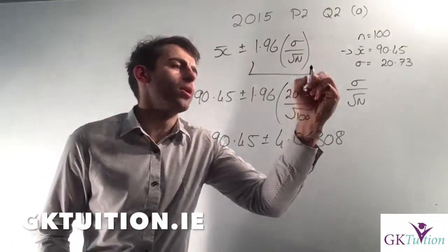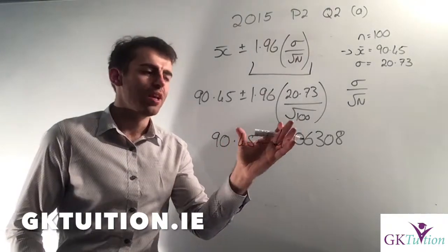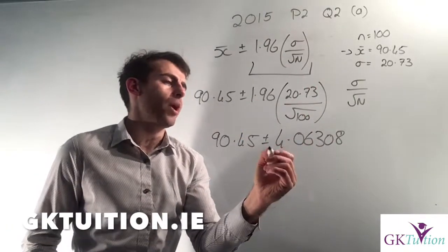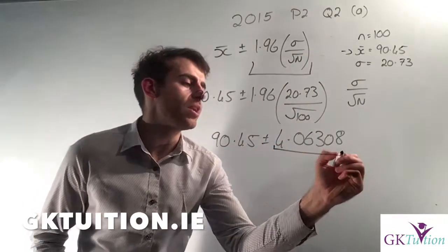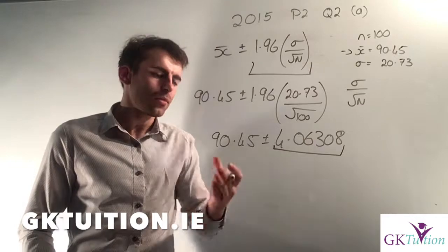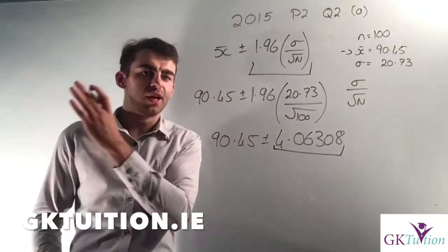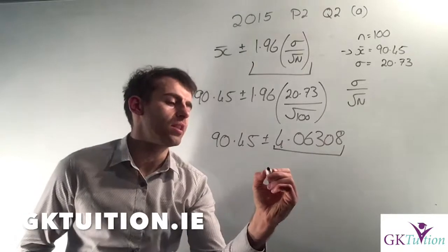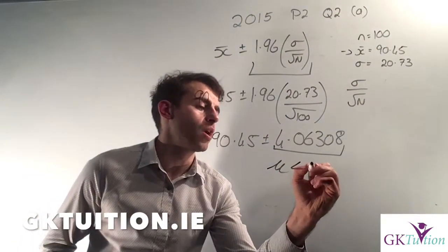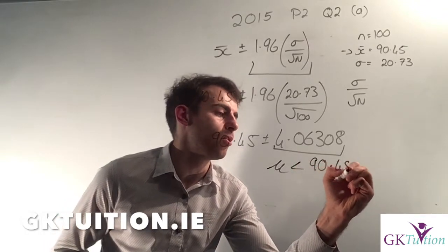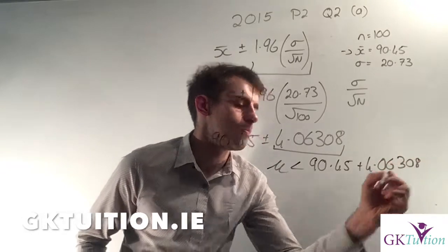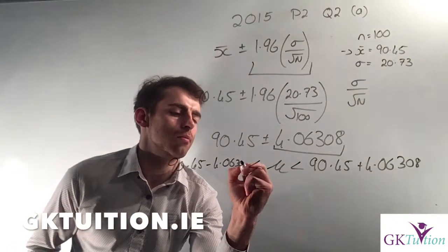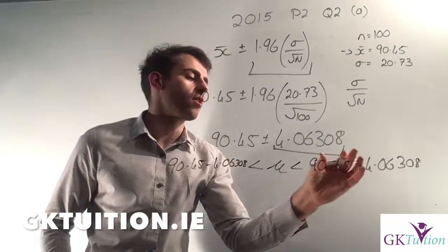It gives me a fairly good idea that the average of every single person must be somewhere around €90.45. My 1.96 times sigma over the square root of N allows me to calculate the degree to which my results could be wrong. Based on the fact that I've only surveyed 100 people, my average could be out by about €4.06. I don't know if the 100 people I surveyed spent more or less than the average, so I need to plus or minus this — add it on or subtract it.